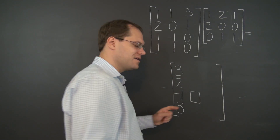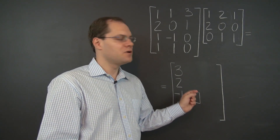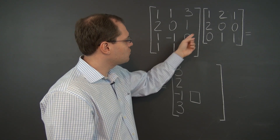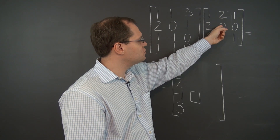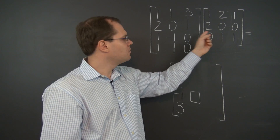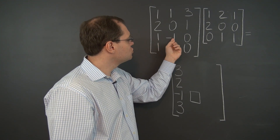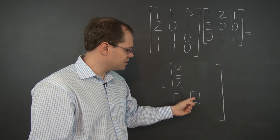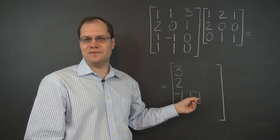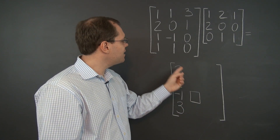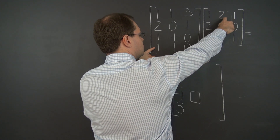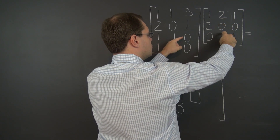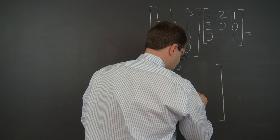What will this one entry be? It will be the linear combination of these three columns with coefficients two, zero, and one. But we only need to pay attention to the third entry of each column because we're interested in the third entry of the answer. So that value would be two — still two, still two. So it's two.